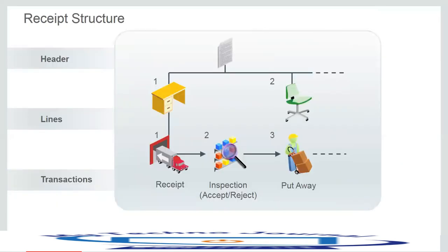This diagram depicts the receipt structure, showing the three steps including receipt, inspection, and put away. The receipt header contains details related to the overall purchase receipt — there can be only one header per receipt, and common information about the source of the receipt is stored at the header. Receipt lines contain details about specific goods, items, or services received, and each transaction made against an individual receipt line is stored in the system as a receiving transaction.